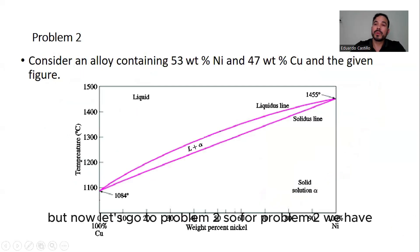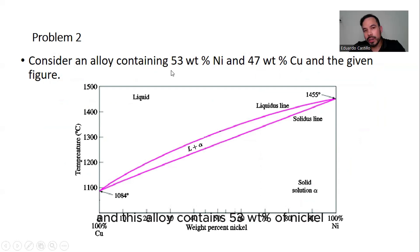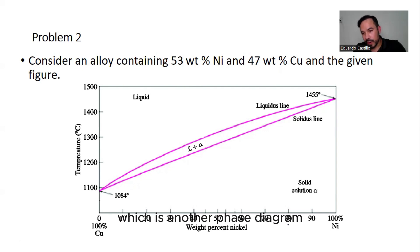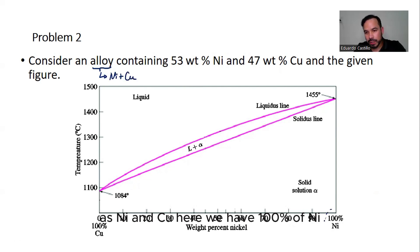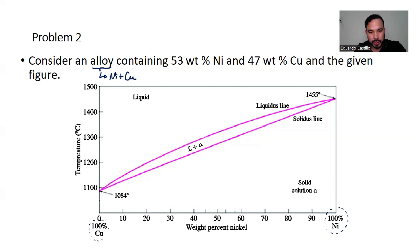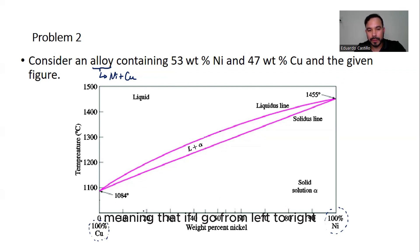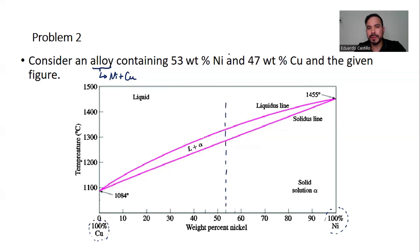Now let's go to problem 2. This alloy contains 53 weight percent nickel and 47 weight percent copper. The phase diagram shows the Cu-Ni system: 100% nickel on one side and 100% copper on the other. The composition of 53 weight percent nickel falls at this specific vertical line on the diagram.